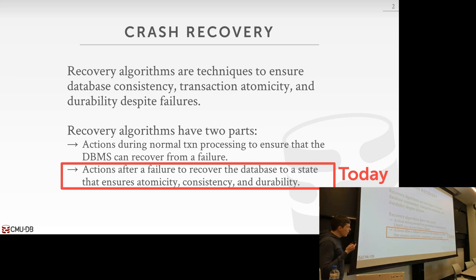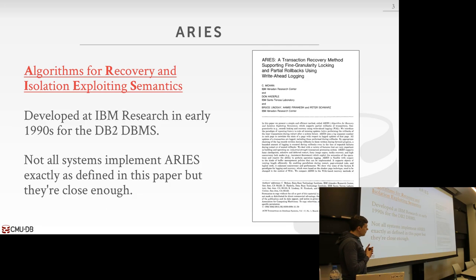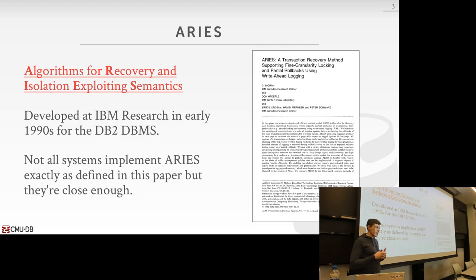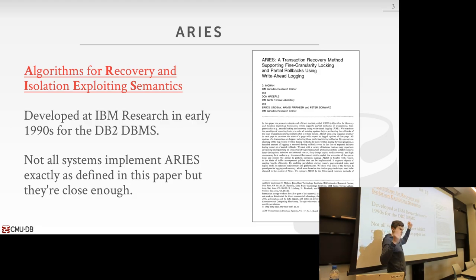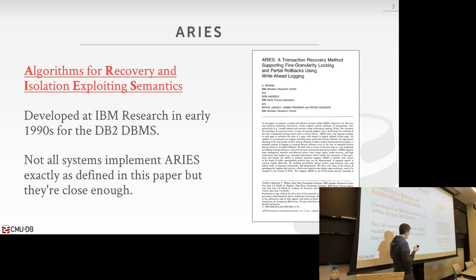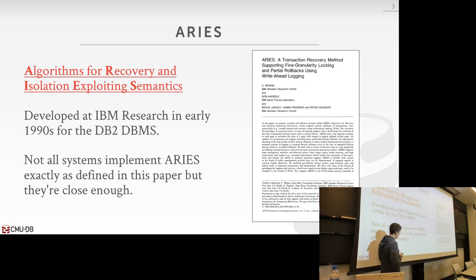The protocol we're going to look at today is based on this technique developed at IBM called ARIES. ARIES was developed at IBM Research in the late 1980s, early 1990s for DB2. There's this seminal paper that came out — it's super long, 70 pages, so go ahead and give it a crack and see whether you can get through the whole thing.